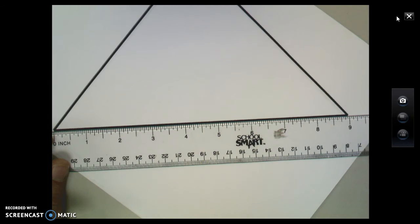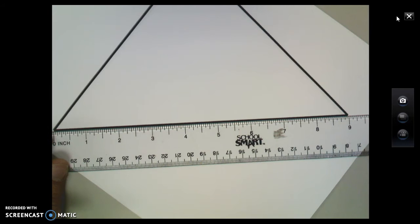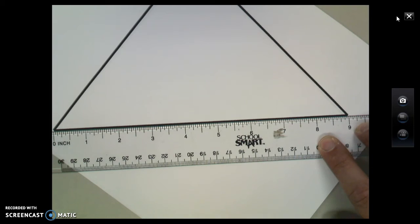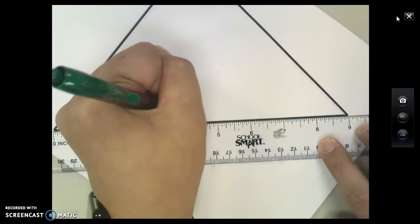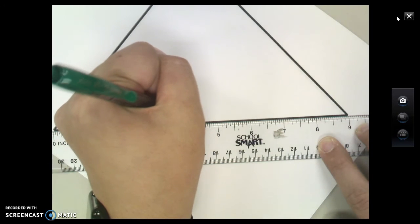So for example, this segment here on the triangle is just about nine inches. So that means that my midpoint is going to occur right at the four and a half inch mark. I'm going to go ahead and put a point there.